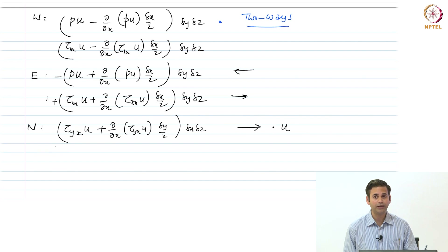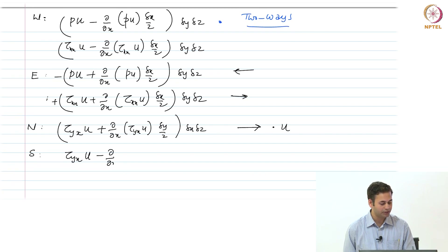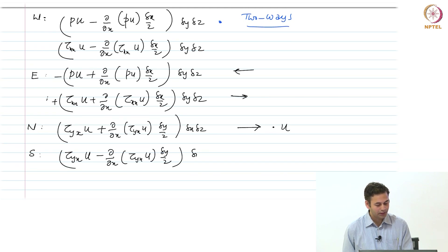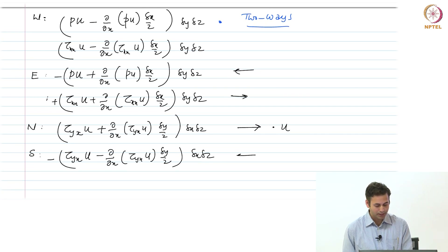On the south face, tau_yx acts in the negative x direction, so the rate of work done is: −[tau_yx·u − (∂/∂y)(tau_yx·u)(δy/2)] · δx·δz, and this comes with a minus sign because it acts in the negative x direction, and we still multiply by velocity u.